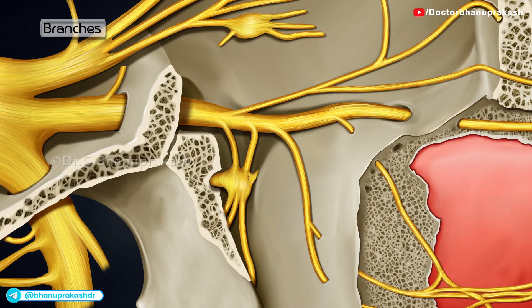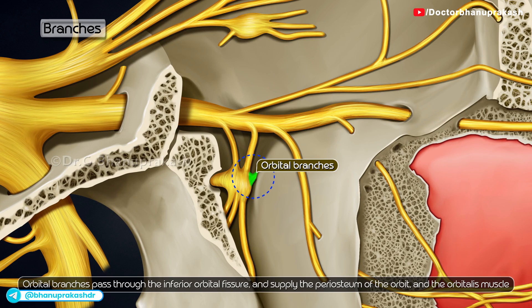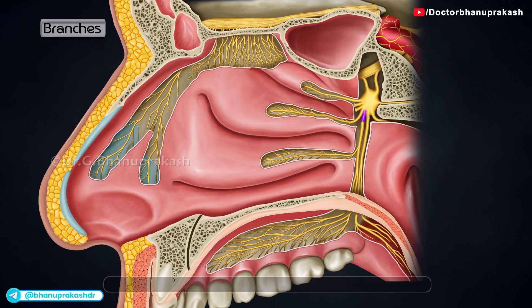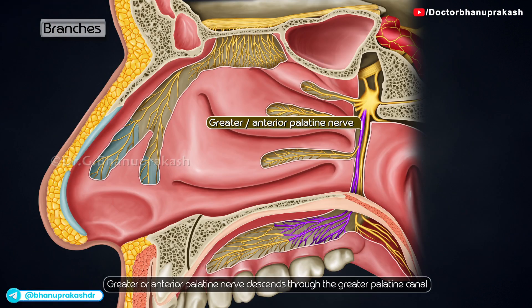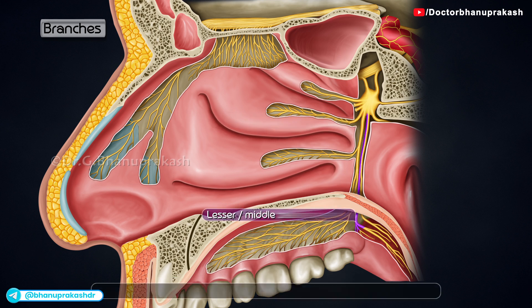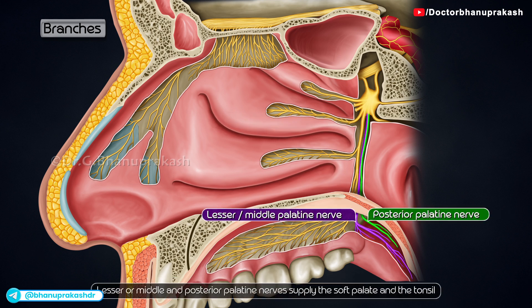The orbital branches pass through the inferior orbital fissure and supply the periosteum of the orbit and the orbitalis muscle, which is involuntary. Palatine branches: The greater or anterior palatine nerve descends through the greater palatine canal and supplies the hard palate and the labial aspect of the upper gums. The lesser or middle and posterior palatine nerves supply the soft palate and the tonsil.